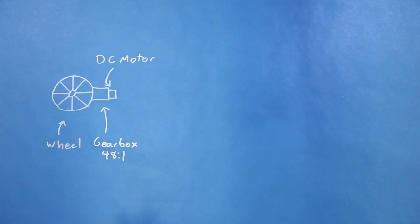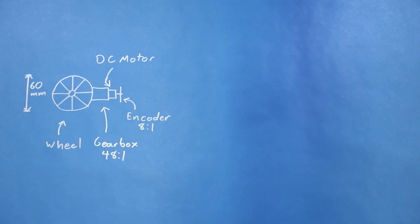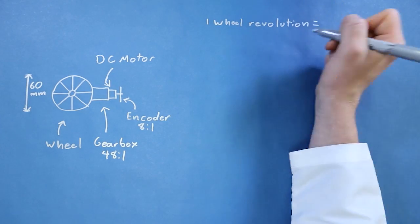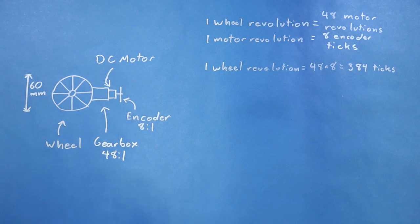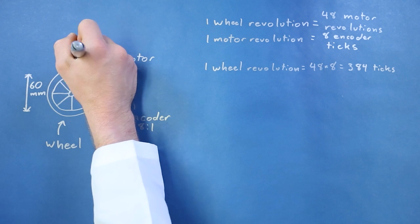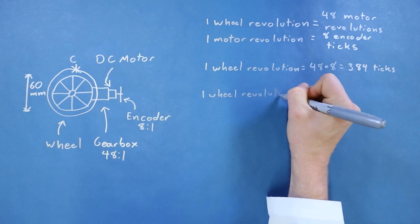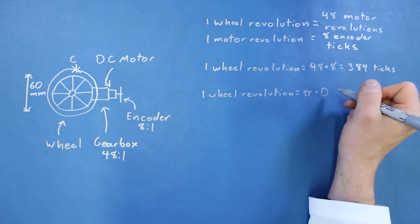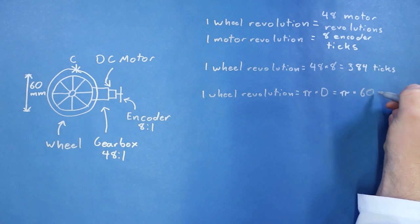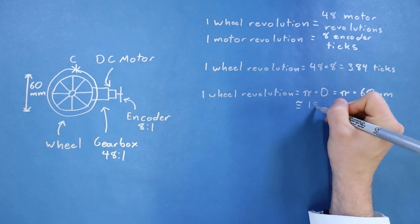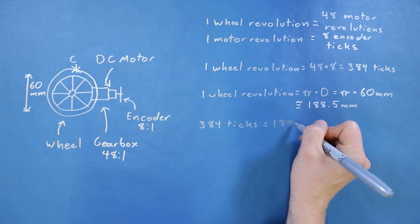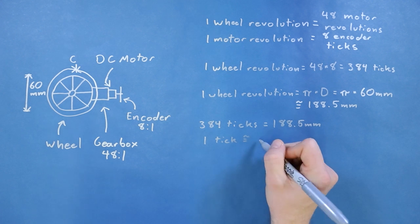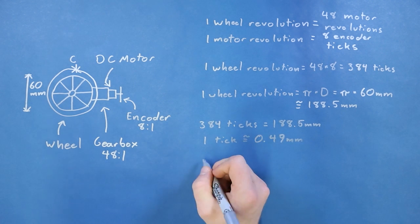So how do we calculate how far our robot has moved? First, we find out how many encoder ticks we need per revolution of the wheel. Because of the gearbox, 1 wheel revolution equals 48 turns of the DC motor. We also know the encoder toggles the pin 8 times per motor revolution, so we multiply 48 by 8 to get 384 encoder ticks per wheel revolution. Assuming the wheel stays on the ground and doesn't slip, it moves a distance equal to its circumference per revolution. The circumference is pi times the wheel's diameter, which I measured to be 60 millimeters for Fred — about 188.5 millimeters per revolution. So each tick means the robot moved about 0.49 millimeters.